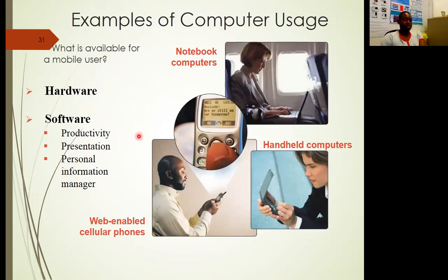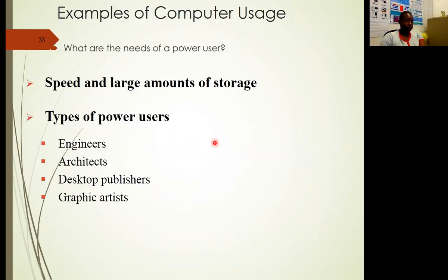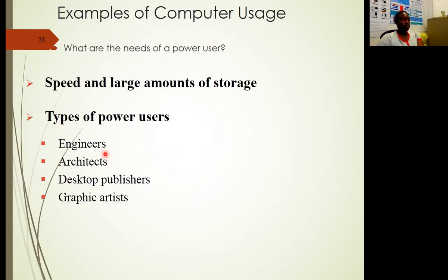For a mobile user, they use notebook computers or laptops, handheld computers, or web-enabled cell phones. The software normally used is productivity, presentation, and personal information management software. A large business uses web access, public access and telecommunications, networking, productive software, and scheduling — you may find that a corporate has a computer center where these things are done. Power users need much more speed and storage, and examples include engineers, desktop and web publishers, and graphic artists who use powerful machines for simulations, data processing, and networking.